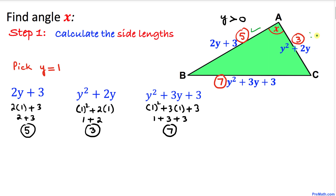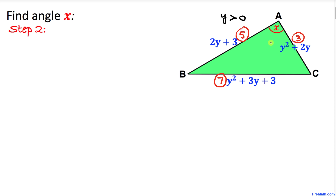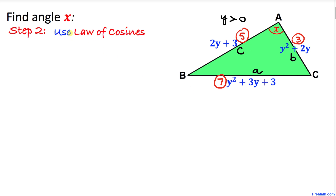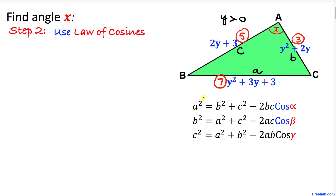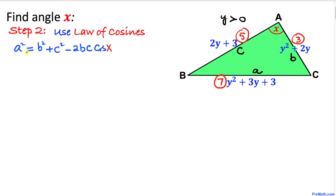Here's our next step. Let's call side BC lowercase a, since it is opposite vertex A. Side AC is lowercase b, opposite vertex B. Side AB is lowercase c. To calculate angle x, we are going to use the Law of Cosines: a squared equals b squared plus c squared minus 2bc cosine of alpha, where alpha in our case is simply x.